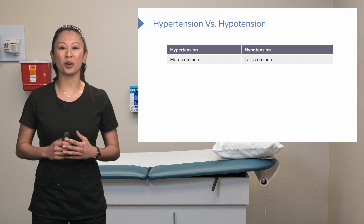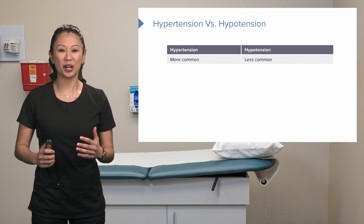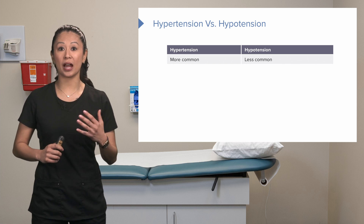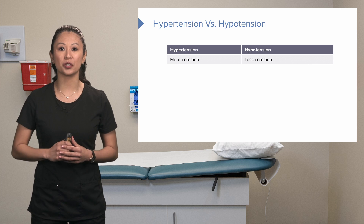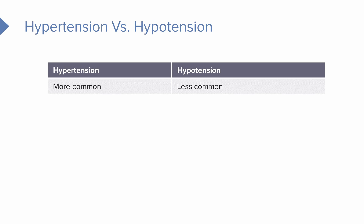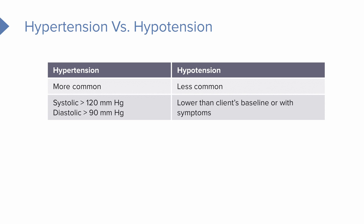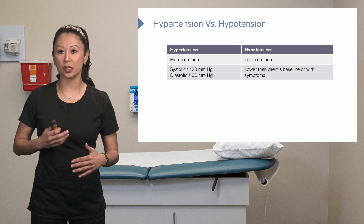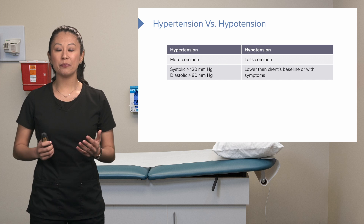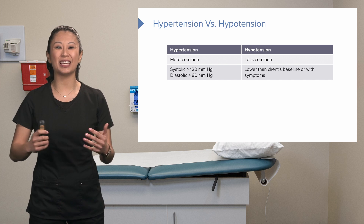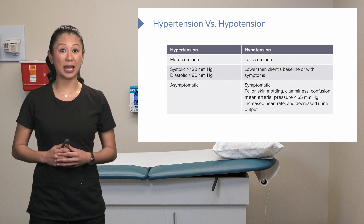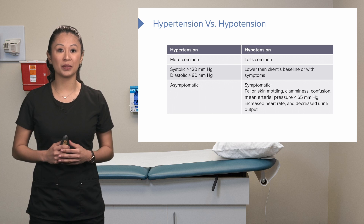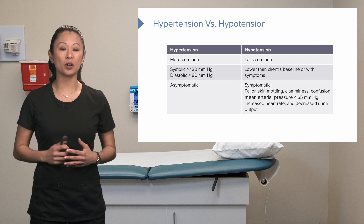Let's talk about two common issues: hypertension versus hypotension. Hypertension is much more common and is defined as systolic greater than 120 and/or diastolic greater than 90. Hypotension is lower than the patient's baseline or when the patient starts having symptoms; it varies depending on the patient's trend and baseline. With hypertension, patients are usually asymptomatic — they feel okay — which is why it's called the silent killer, as it can affect perfusion to organs and the heart long term.